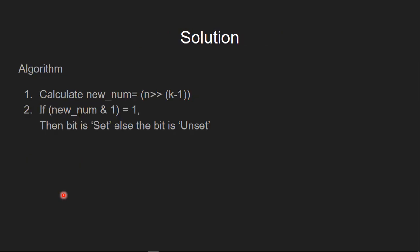Let's see how to solve this problem. The algorithm is: in the very first step, we calculate a new number by right shifting n by k minus 1 positions. And in the second step, we find the bitwise AND of the new number with 1, and if the bitwise AND of these two numbers is 1, then the bit is set, else the bit is unset.